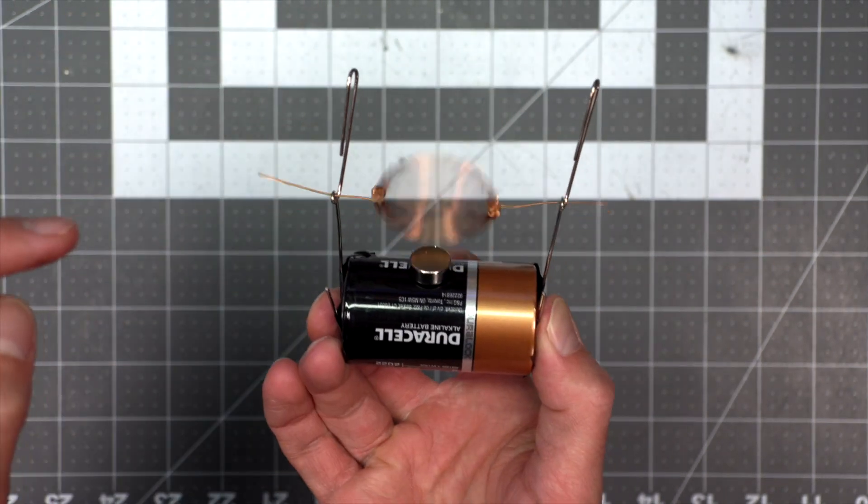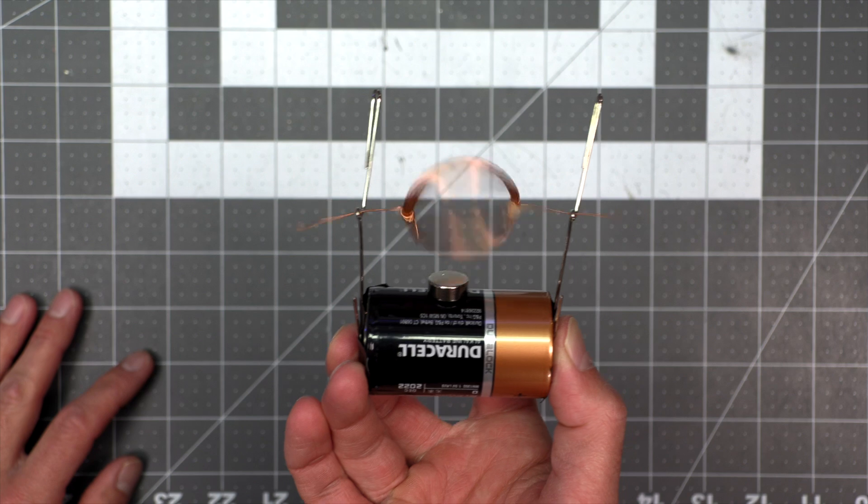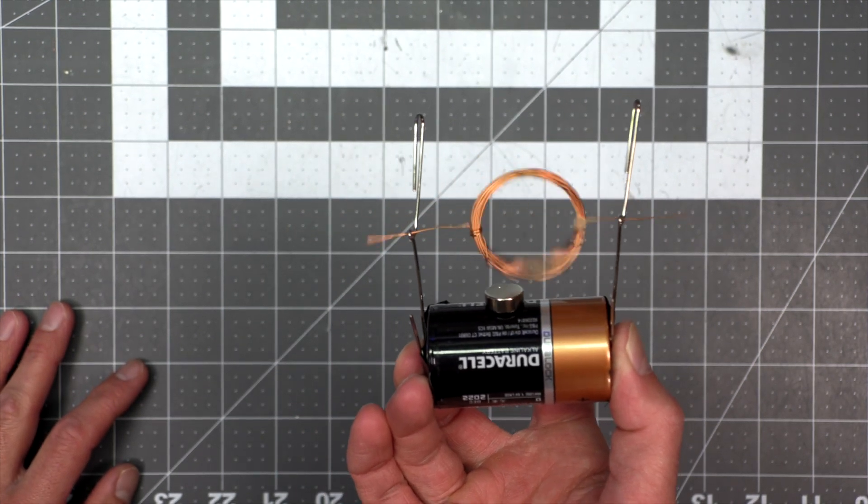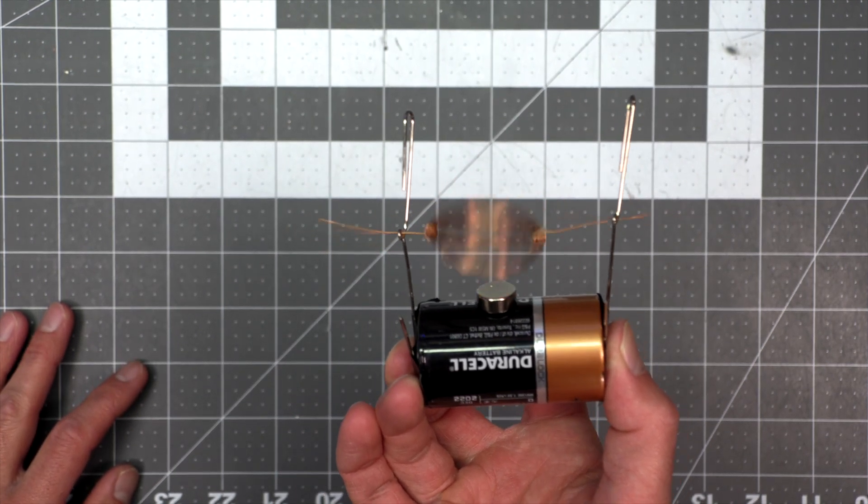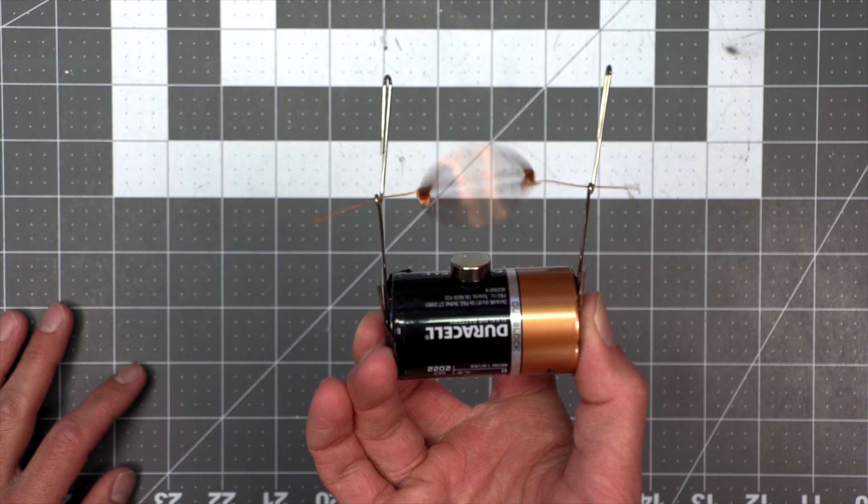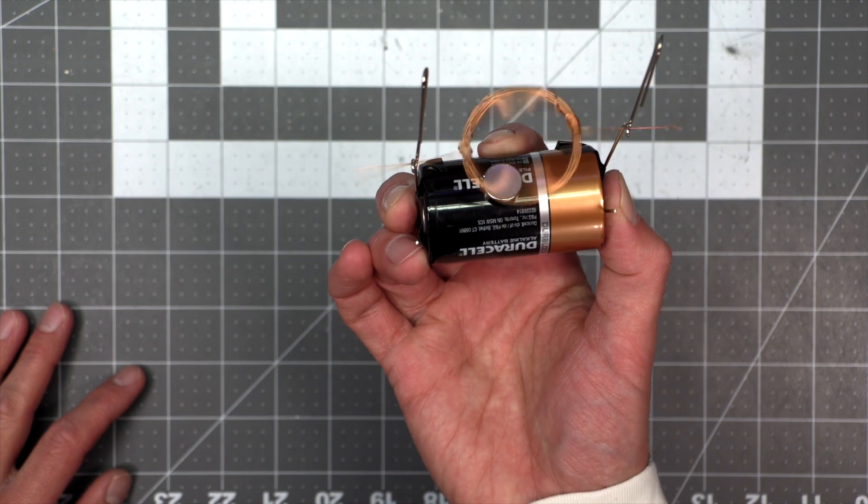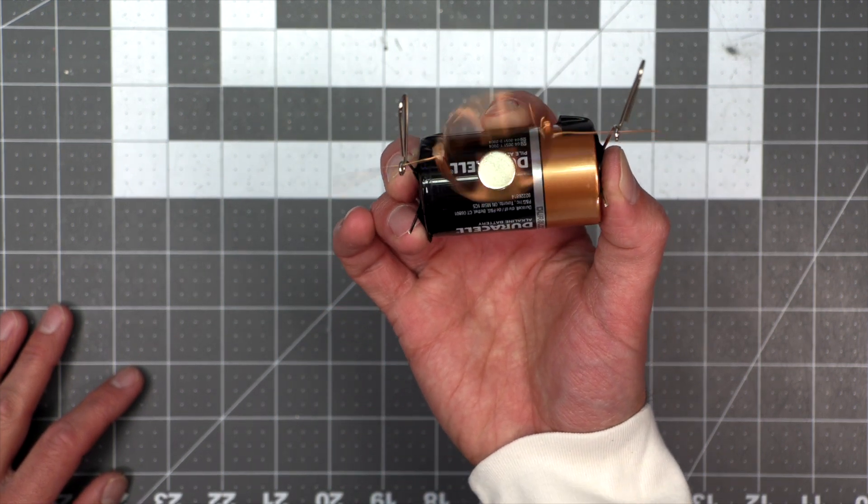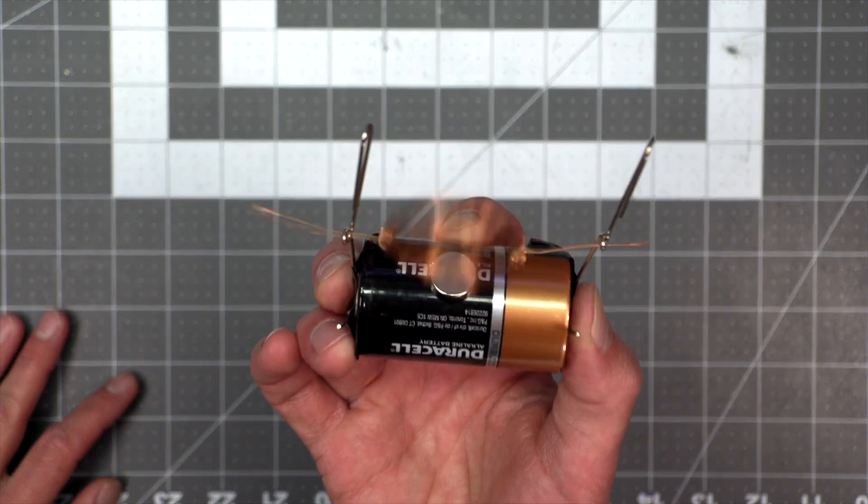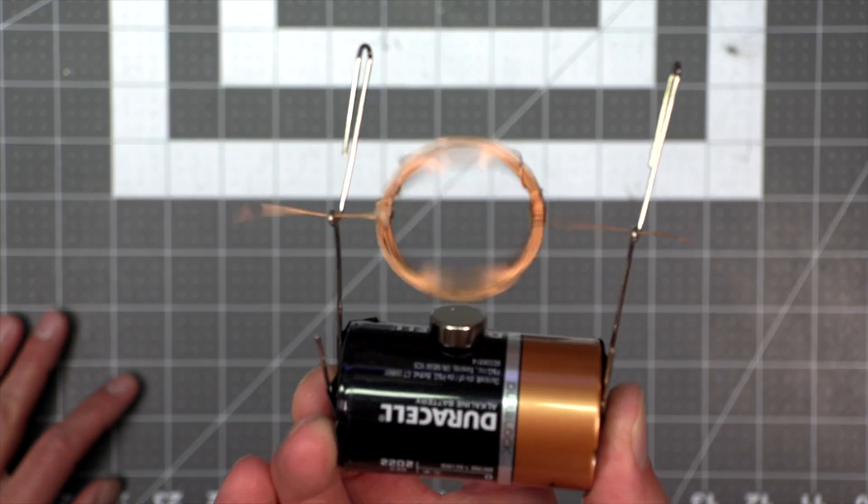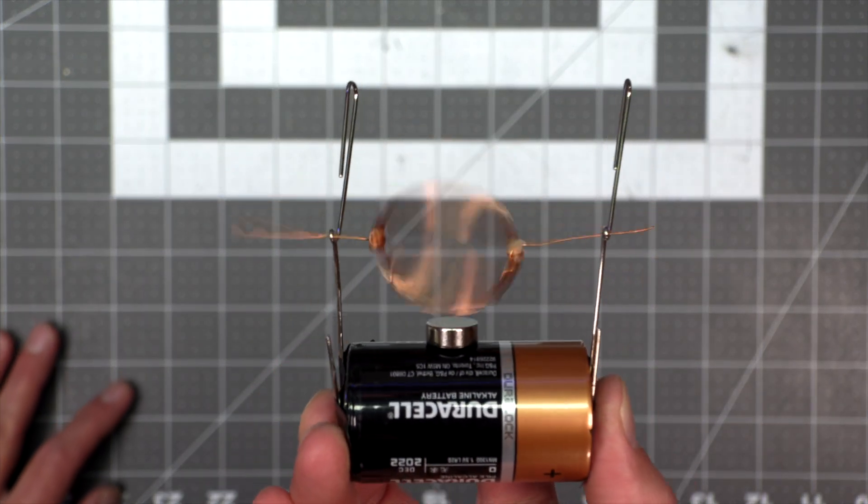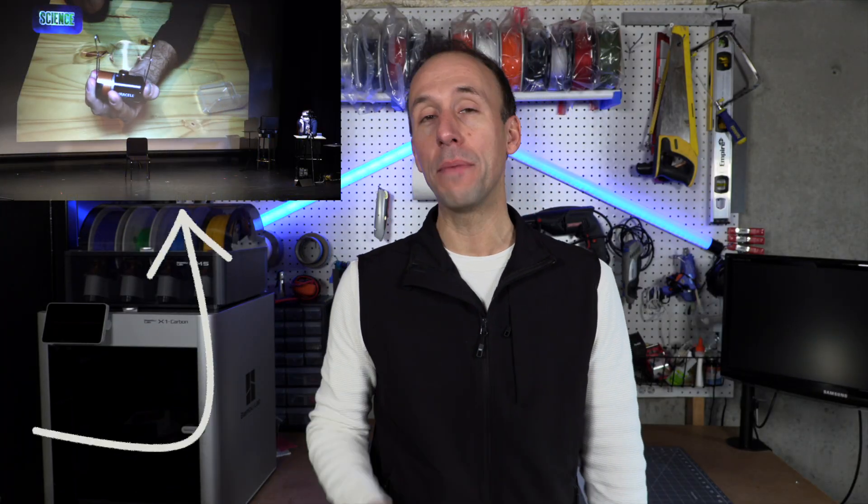These little motors are so cool, it looks like a magic trick. They can get going pretty fast. If you're having trouble with yours, make sure you sanded it properly, and make sure the coil is just above the magnet so it has maximum repel power. And that is how you make the exact same DC motor I make in my show Engineering Wonder. I hope you give it a shot.